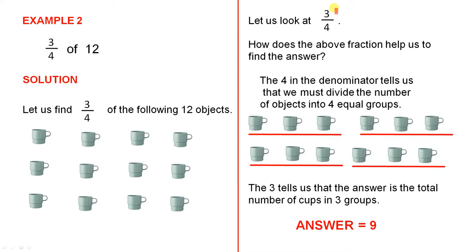What does the 3 tell us? The 3 tells us that the answer is the total number of cups in 3 groups. So that's what the number up the top tells us. So let's add up the total number of cups in 3 groups. Let's look at that group, plus that group, plus this group. We'll leave the last one out because we only want 3 groups. 1, 2, 3, 4, 5, 6, 7, 8, 9. So the answer is 9 because that is the total number of cups in 3 groups. So 3 quarters of 12 equals 9.